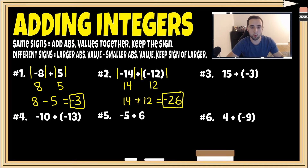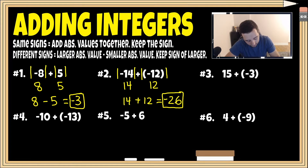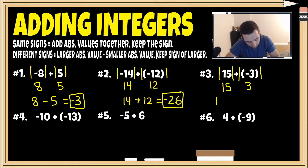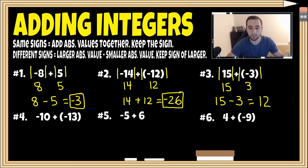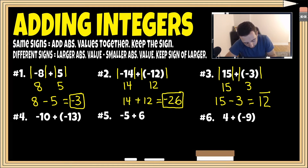For number three, we have different signs — 15 is positive and three is negative — so we use the different signs rule. The absolute value of 15 is 15, and the absolute value of negative three is positive three. We subtract the smaller from the larger: 15 minus three is 12. We keep the sign of the larger absolute value — 15 was originally positive — so the final answer is positive 12.